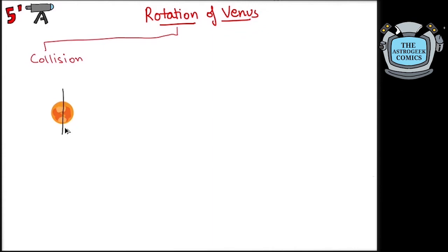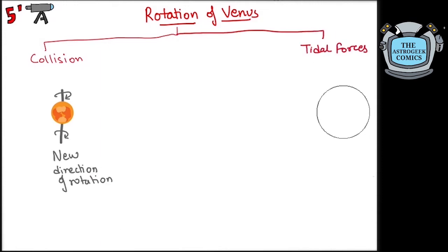It is possible that during its formation, proto-Venus had a collision with another protoplanet which flipped its spin axis. But a more accepted theory is of the tidal forces. As Venus orbits the Sun, there is more pull on the side closer to the Sun than on the side away from it, because of which Venus bulges towards the Sun. Similar tidal forces on Earth due to the Sun and the Moon are responsible for tides and hence the name.